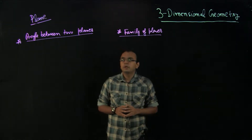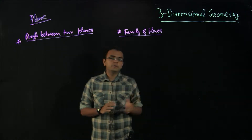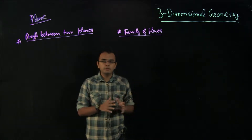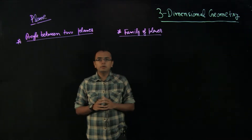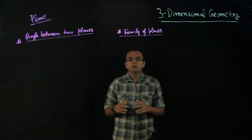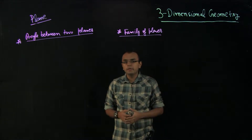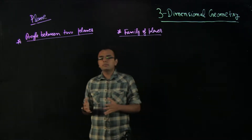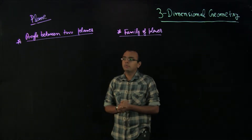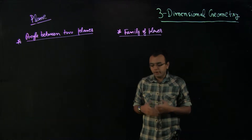Hi everyone. In this video we will be talking about two subtopics in the part of planes for 3D geometry. The two topics we will be discussing will be angle between two planes and family of planes. In the last video we discussed the equation of planes, what is the normal vector, intercept form, and things like that. Here we will go from one plane to two planes. Understanding vectors very well is important as we go into the topic of angle between two planes.